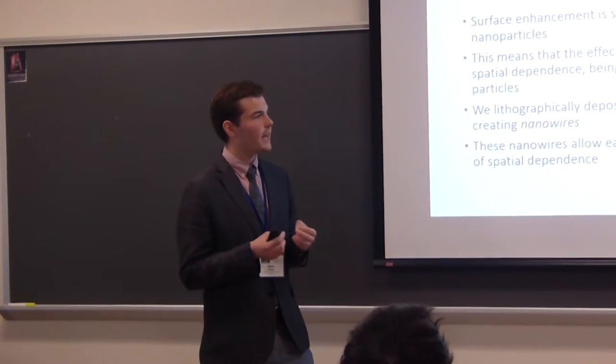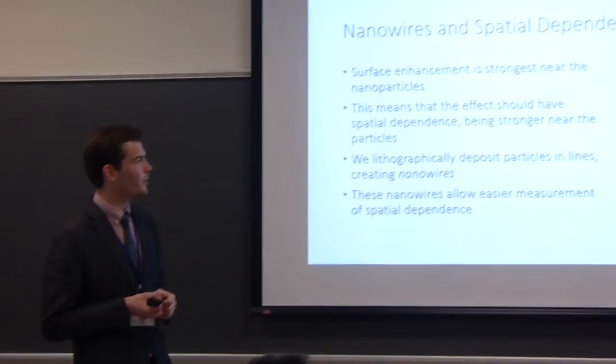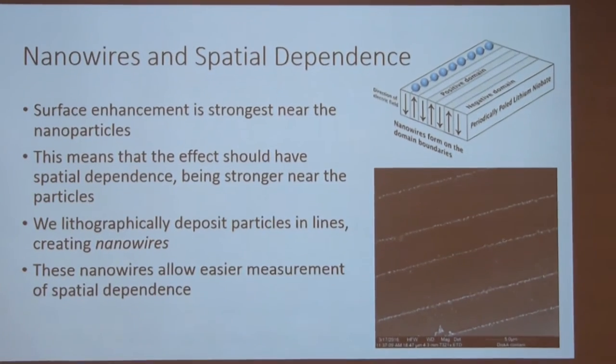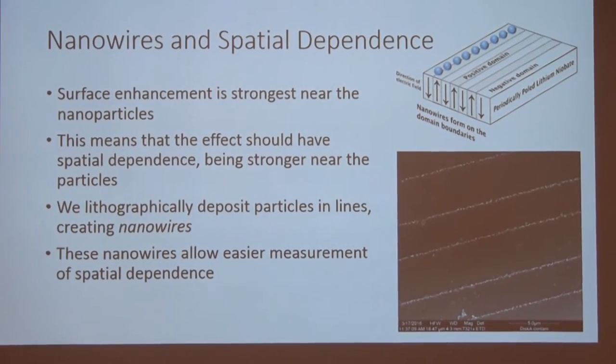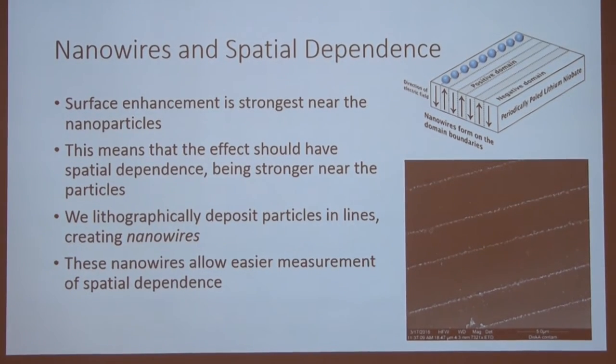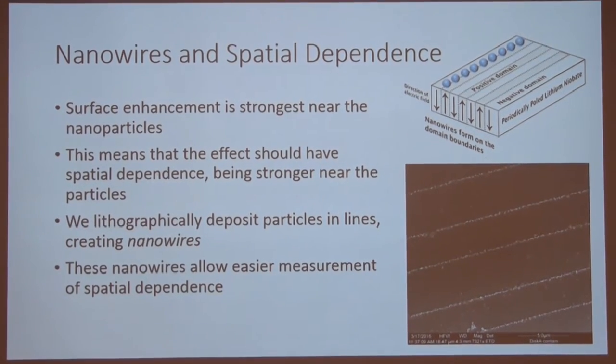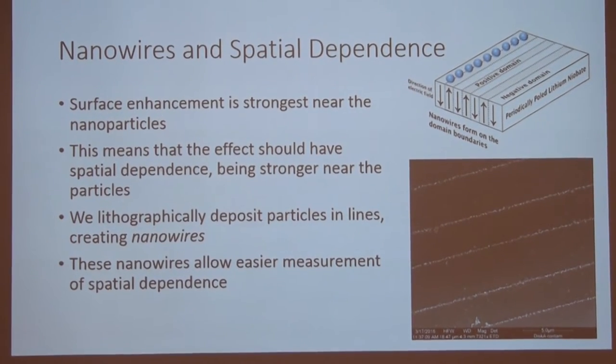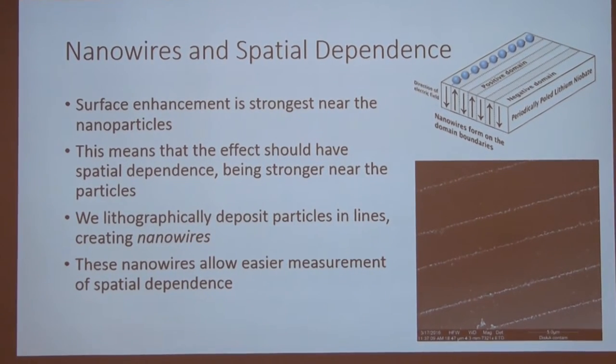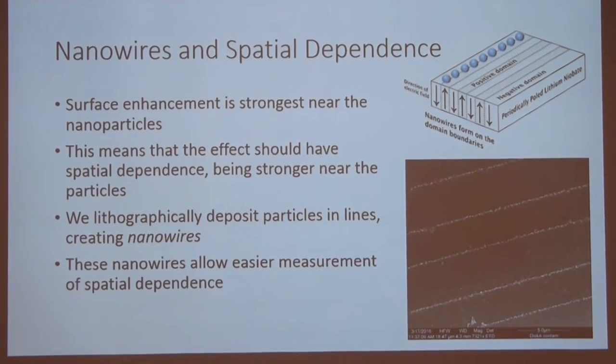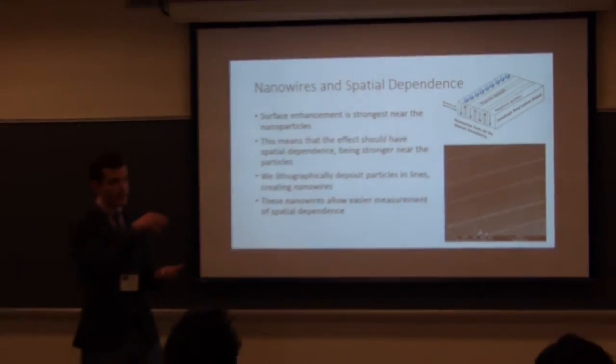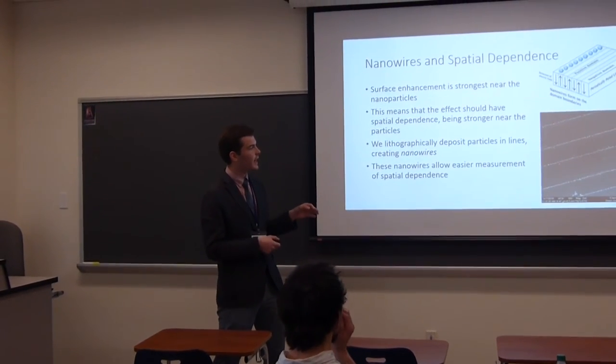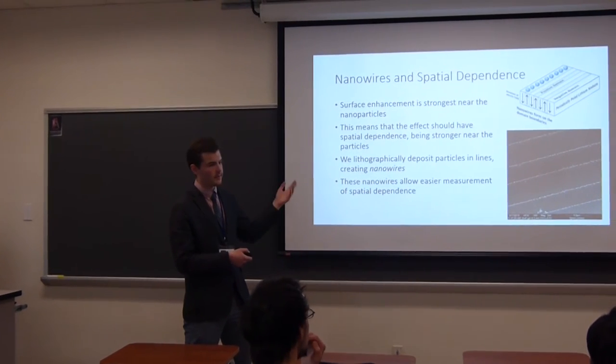So, here at UNC Asheville, the small group, that's the laboratory group that I'm involved with, we use nanowires as our surface enhancement substrates, the thing that we use to get surface enhancement. So, the way that we make nanowires is we take something called a periodically-poled lithium niobate template, and basically it has negative and positive domains, and they're aligned like that. So, you have these boundaries between the positive and negative electrical domains. Along those boundaries, if we deposit silver, it will preferentially form on the lines, and we get nice little lines of silver.